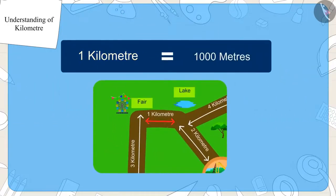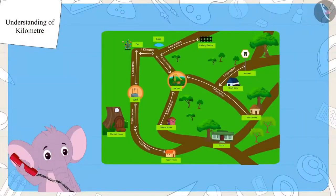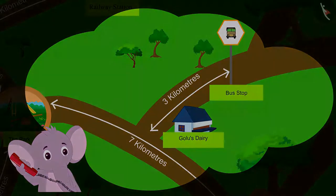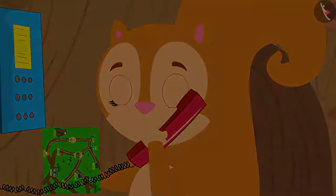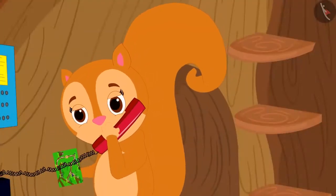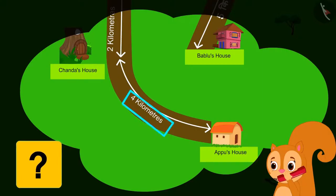Similarly, kilometer is the unit used to measure the distance between two places. One kilometer is equal to 1,000 meters. Appu told Chanda to look at the map and find Golu's dairy. The dairy is three kilometers away from the bus stop. Chanda also noticed on her map that four kilometers is written between Appu's house and her house, so Appu's house is four kilometers away from hers.